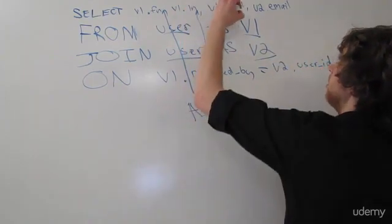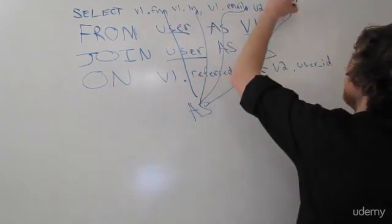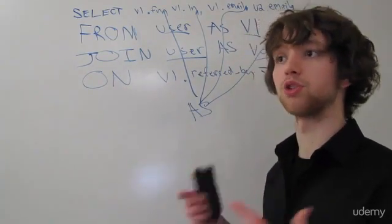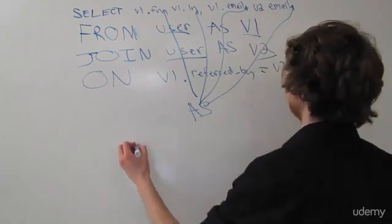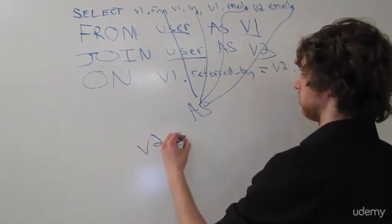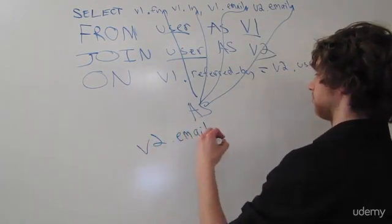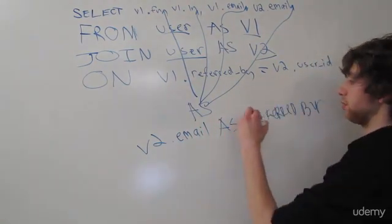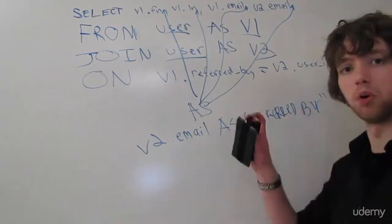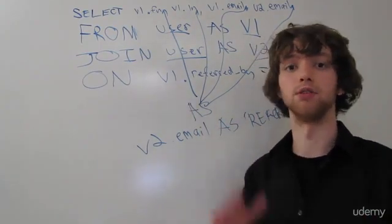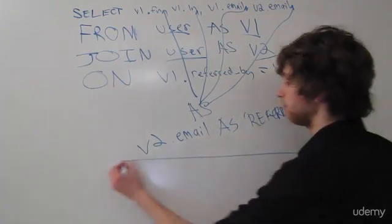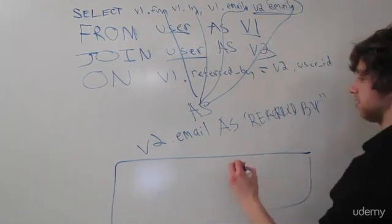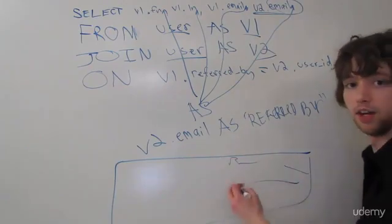So you can put it here, here, here, and here. If I wanted the table 2 email — the person who referred — you could make it say V2.email as 'referred by'. You're going to want to put that in quotes to indicate you want that string as the title for that column. And then when you get that new joined table, instead of saying email, it's going to say 'referred by', and then it'll list the data.